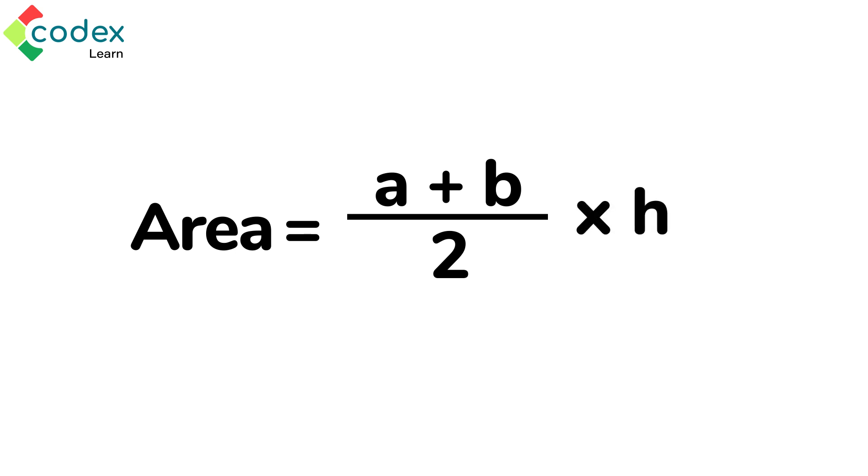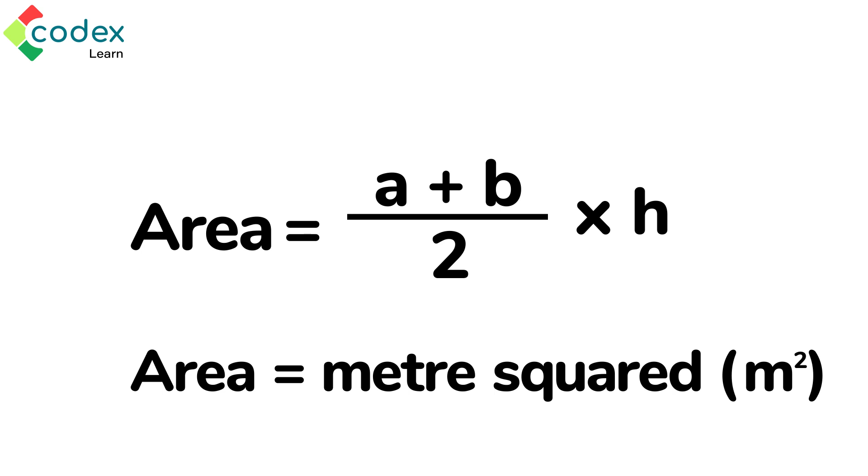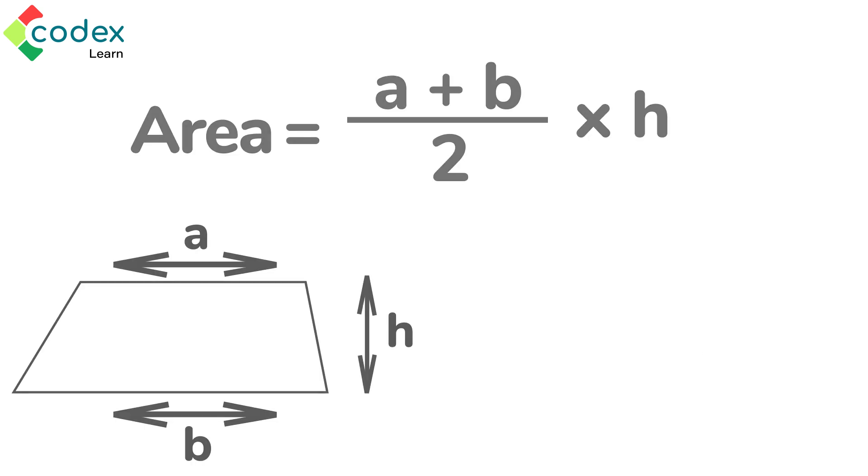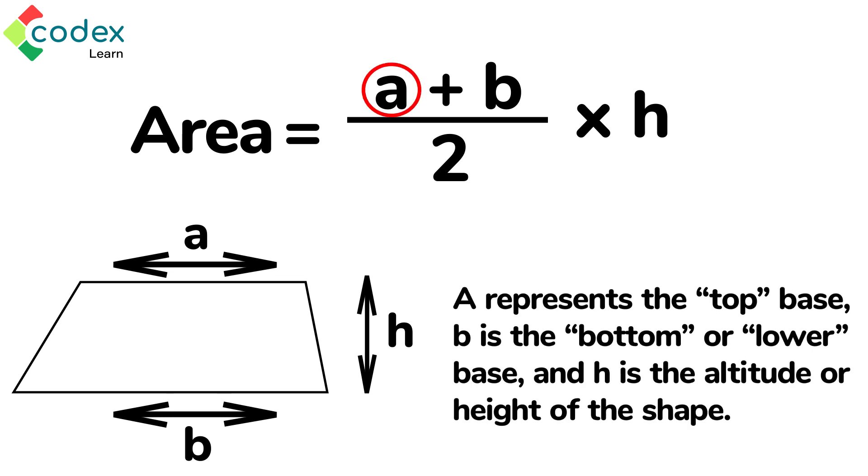The area is expressed in meters squared. The formula is written this way: In the formula, a represents the top base, b is the bottom or lower base, and h is the altitude or height of the shape.